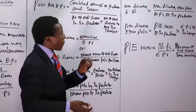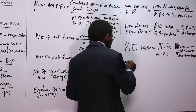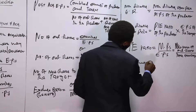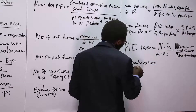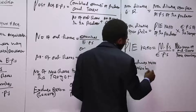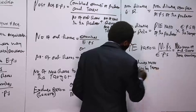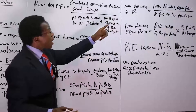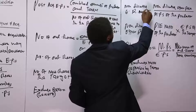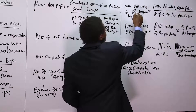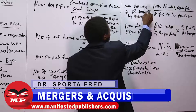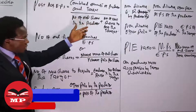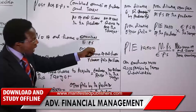We may also have an exchange ratio acceptable by predator shareholders — that is the non-diluting exchange ratio — and separately, an exchange ratio acceptable by target shareholders. For the exchange ratio acceptable by target shareholders, we take the market price of the target multiplied by the number of shares in the predator company, then divide by the offer price of the predator.